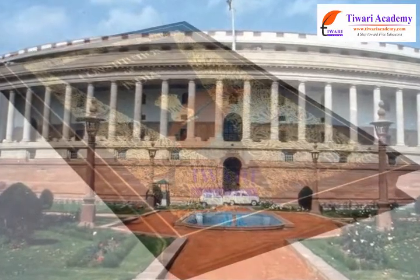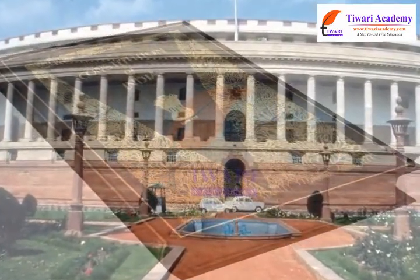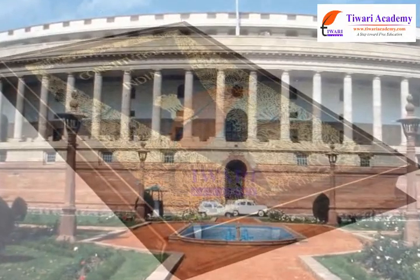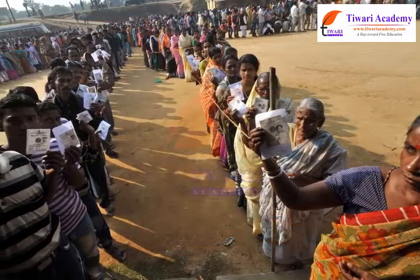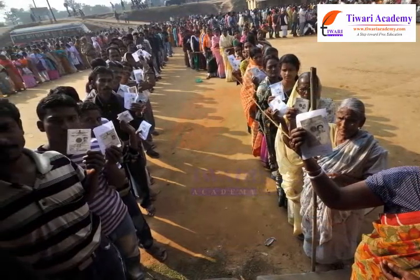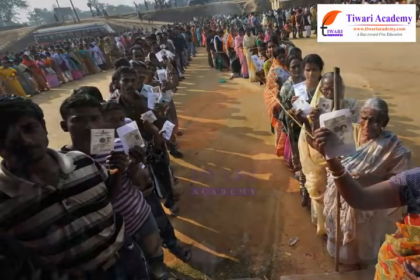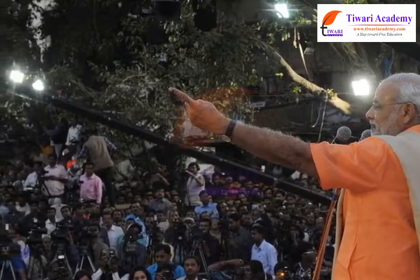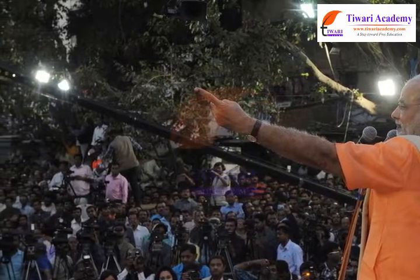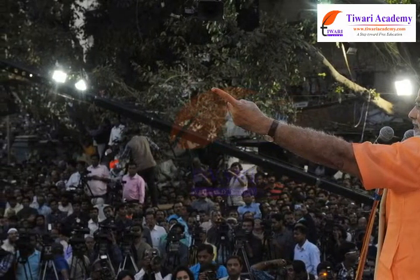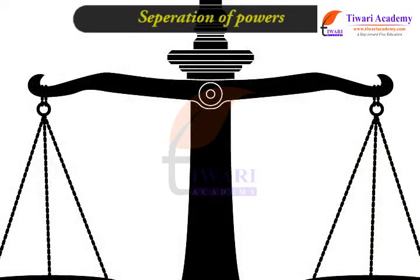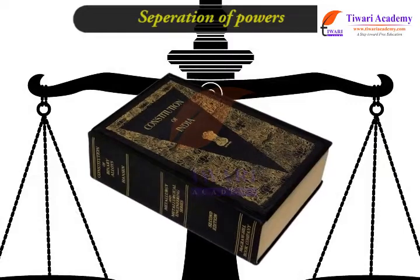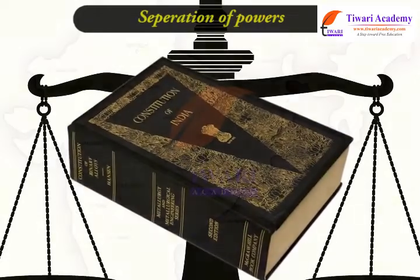Parliamentary form of government. The Constitution of India guarantees universal adult suffrage for all citizens. This means that the people of India have a direct role in electing their representatives. Also, every citizen of the country, irrespective of his or her social background, can contest in elections.